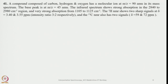Now let us look at another example. A compound composed of carbon, hydrogen, and oxygen has a molecular ion at m/z = 90 in its mass spectrum. The base peak is at m/z = 45. The IR shows strong absorption in the 2840–2980 region and a very strong absorption from 1150 to 1250. 1H NMR shows 2 sharp signals at 3.40 and 3.55 ppm in a 3:2 intensity ratio, and 13C NMR also has 2 signals.